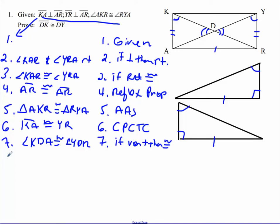Next one. 8. Angle angle side works wonderfully. So we got triangle KAD is congruent to triangle YRD.